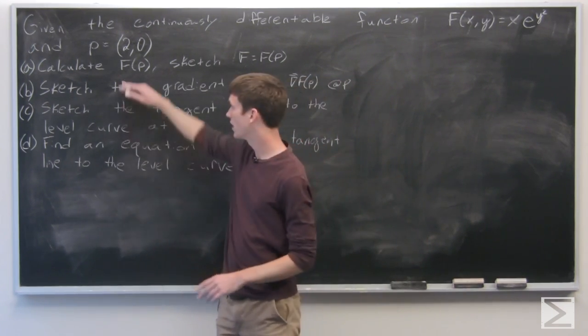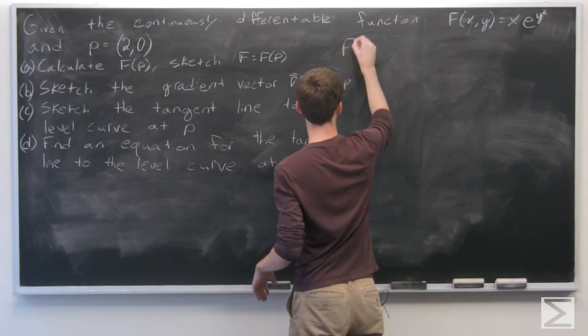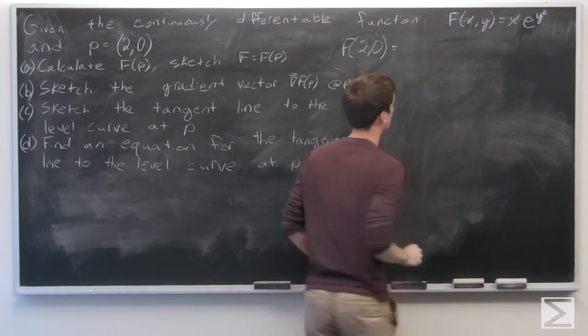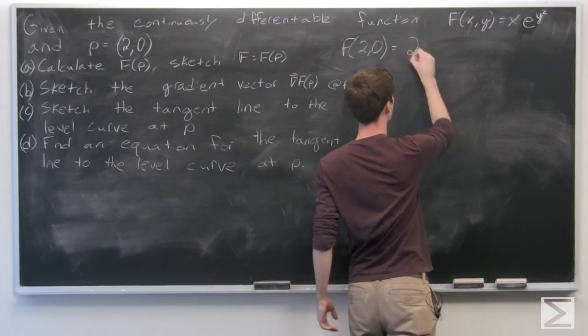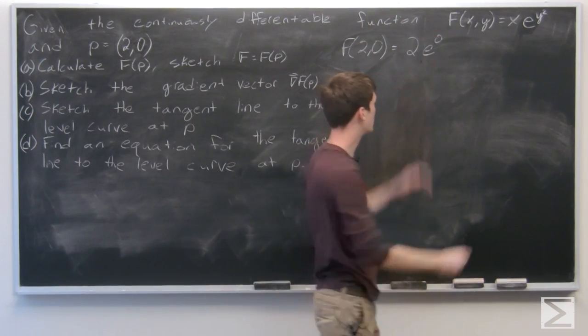First we'll calculate f(p). So given our function, f(2,0) = 2e^0, which is just 2.